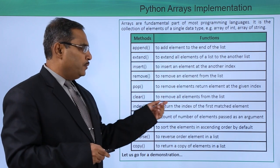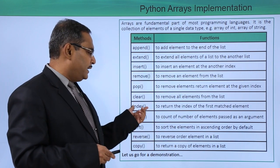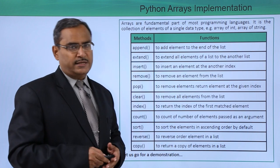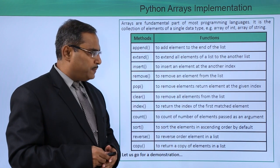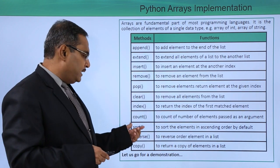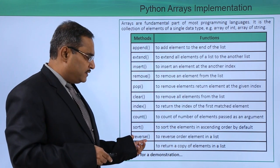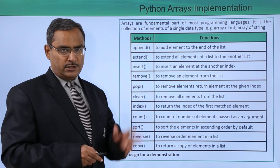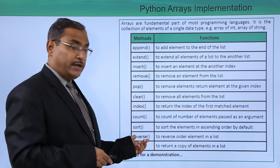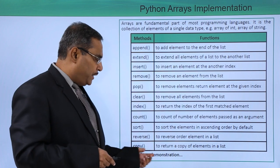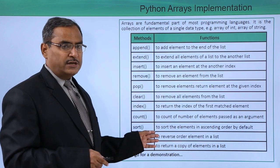Clear to remove all elements from the list, making the array empty. Index to return the index of the first matched element, which is useful for searching. Count to count the number of elements passed as an argument. Sort to sort elements in ascending order by default. Reverse to reverse the order of elements in a list. Copy to return a copy of the elements in a list.